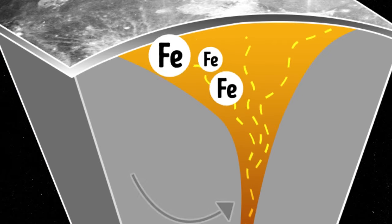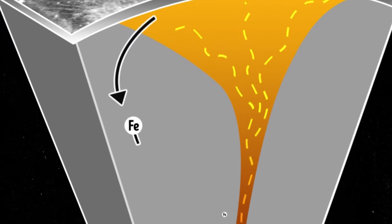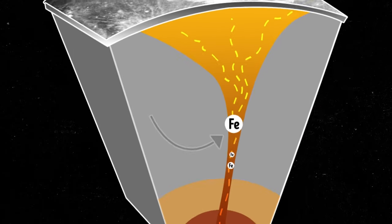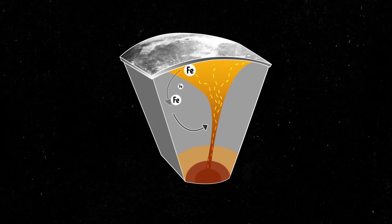It's like a cycle where the moon's mantle material goes up during volcanic activity, carries iron-rich elements to the surface, and then sinks back down.